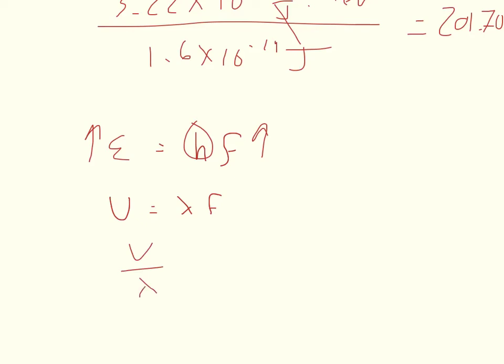Well, V over lambda is equal to F. If frequency goes up and the velocity doesn't change, that means the wavelength has to decrease in order to keep this proportion accurate. So the answer to that question is the wavelength would have to decrease in the part D, the frequency would have to increase.